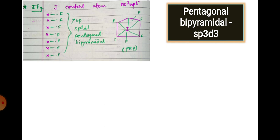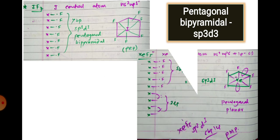For sp3d3 hybridization: IF7 has iodine as central atom with seven valence electrons, all seven shared with fluorine — seven bond pairs, zero lone pairs. Total = 7, sp3d3, pentagonal bipyramidal geometry. For XeF6, xenon has eight electrons; six are shared with fluorine, leaving one lone pair. Total = 6 + 1 = 7, sp3d3, pentagonal bipyramidal geometry, but shape is pentagonal monopyramidal.